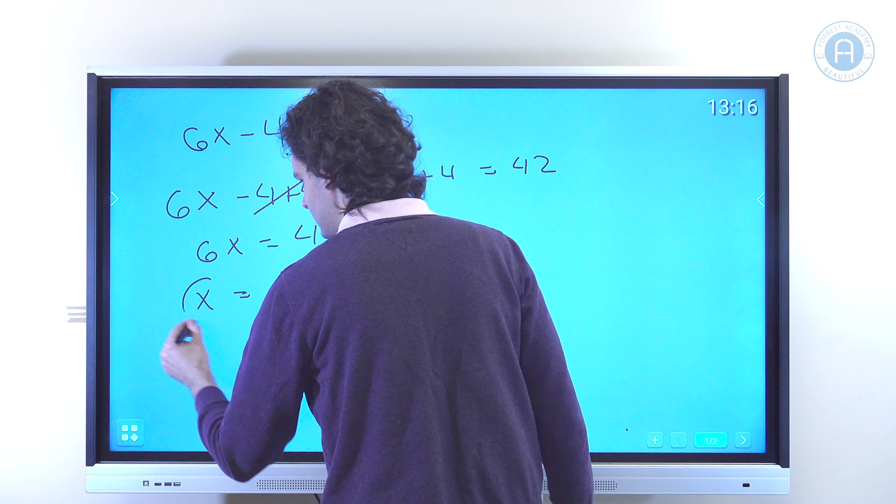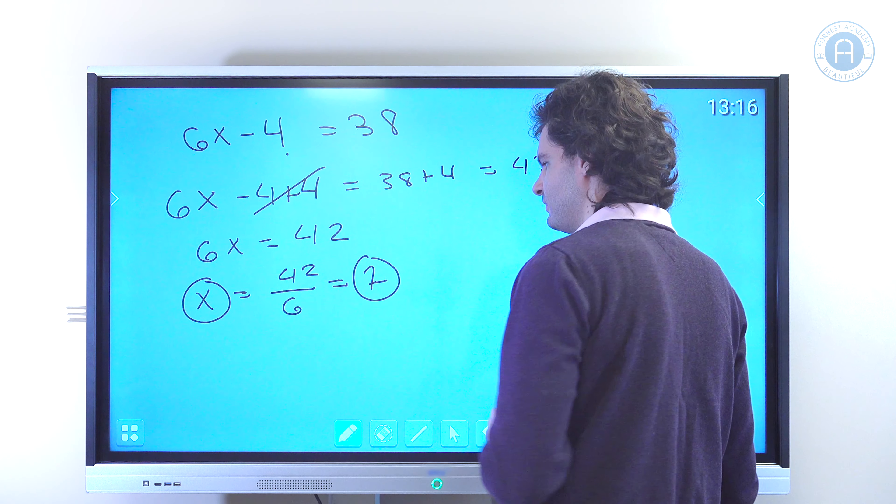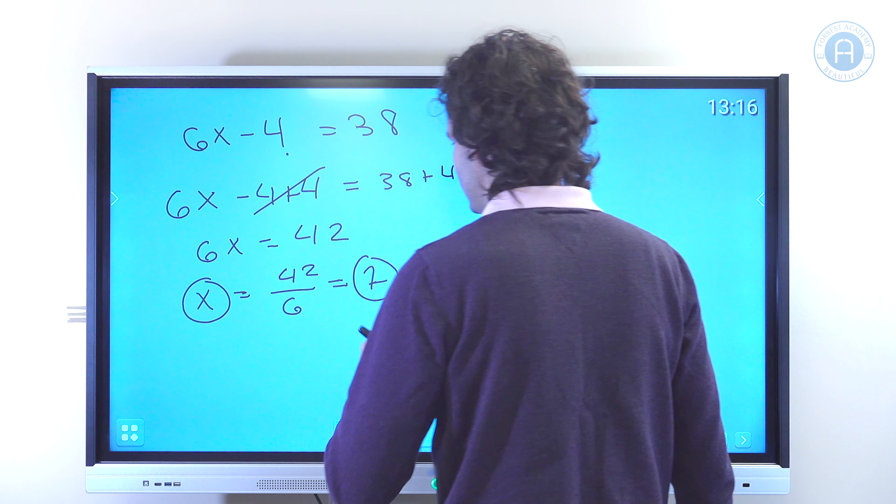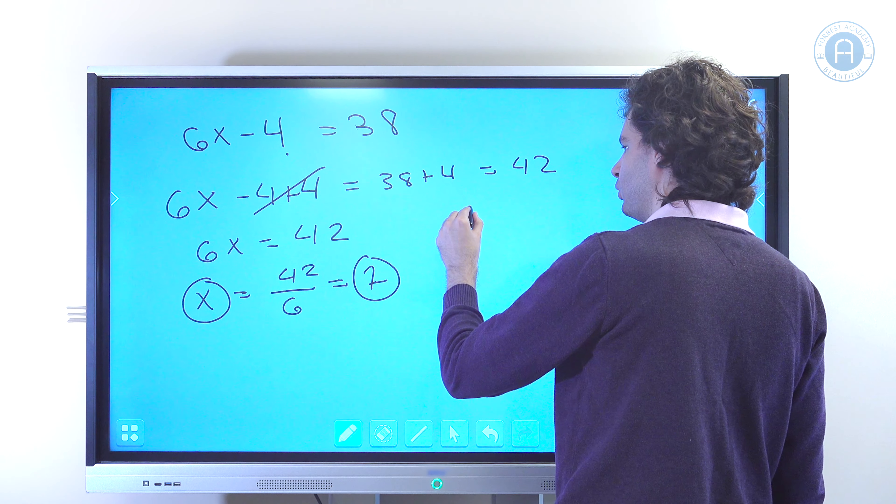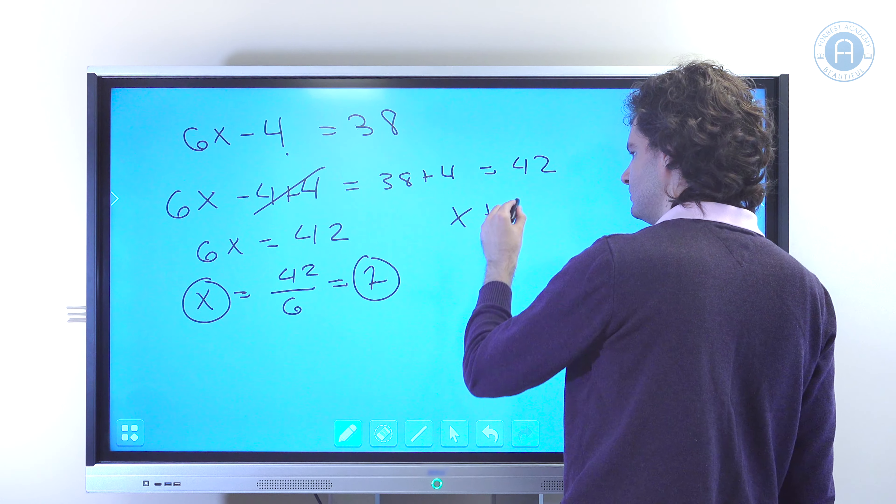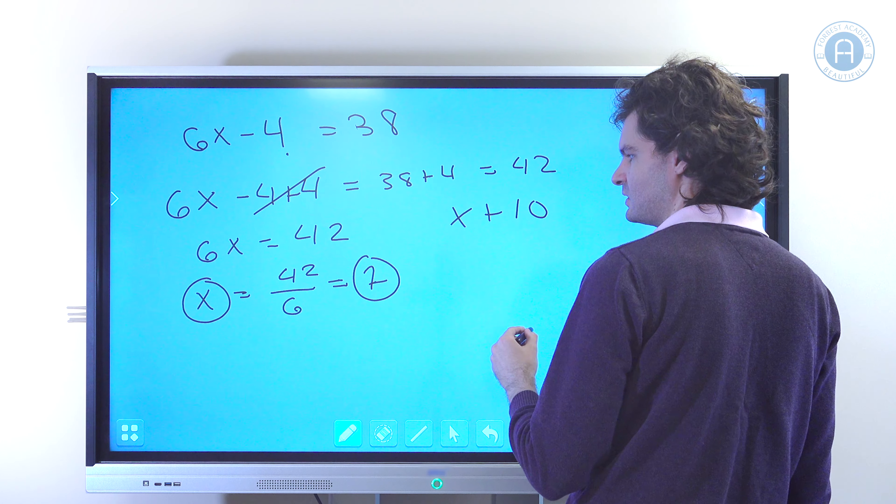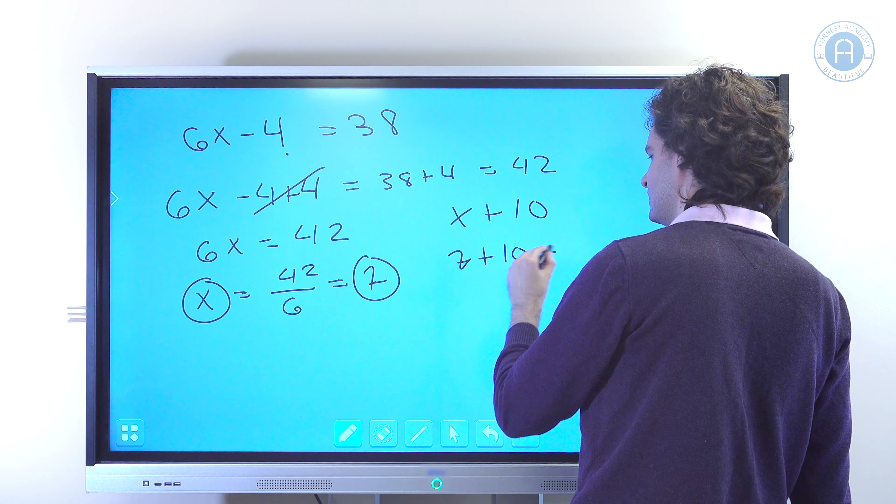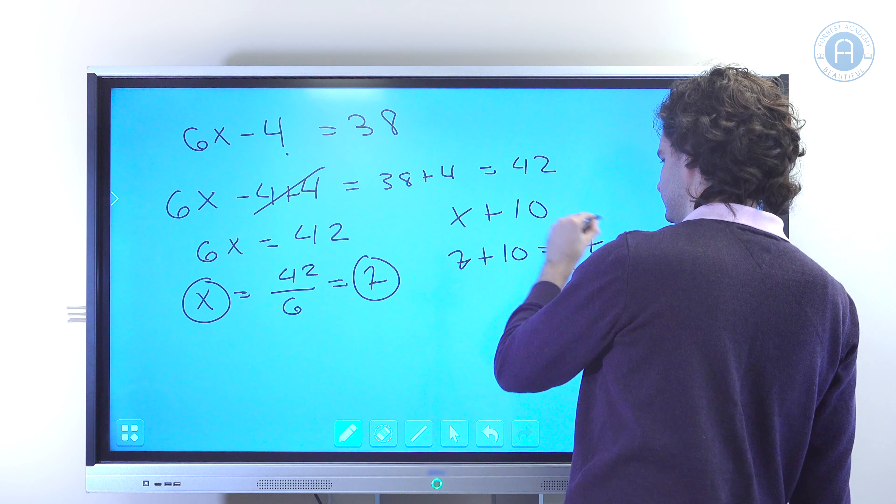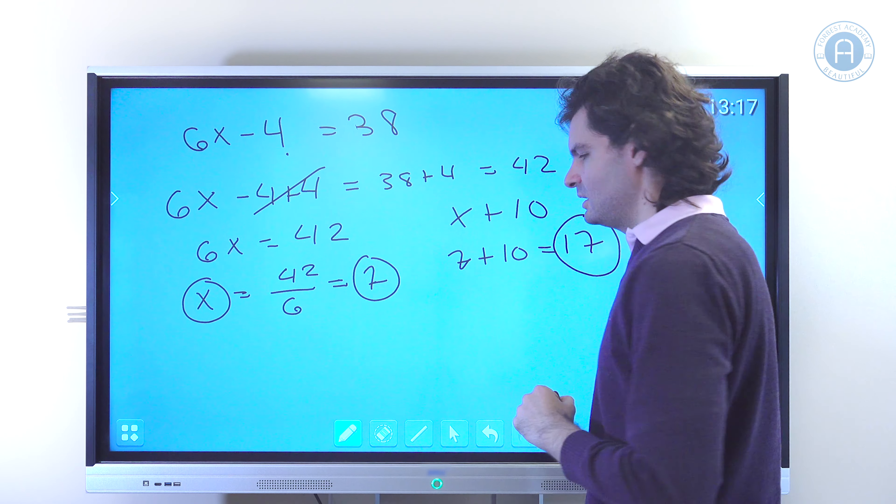So x is 7. Okay, so since x is 7, then we can find what is x plus 10. Well, x plus 10 is going to be 7 plus 10, which is 17. And so the answer is 17.